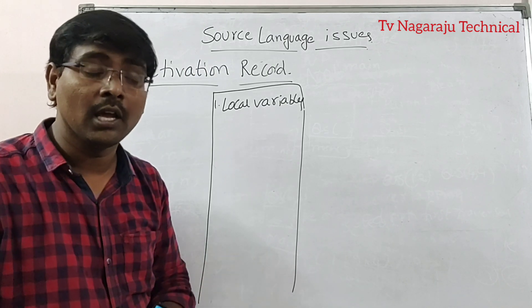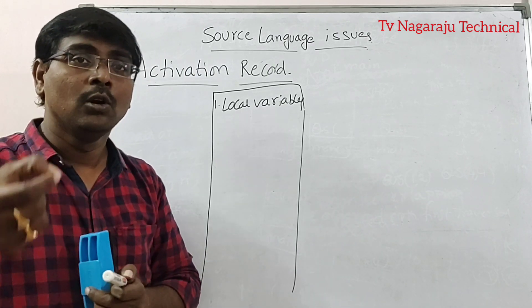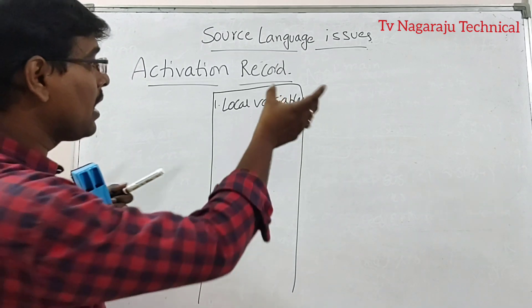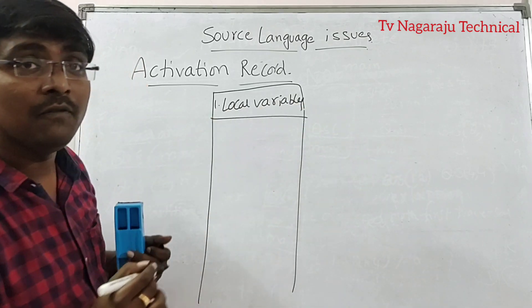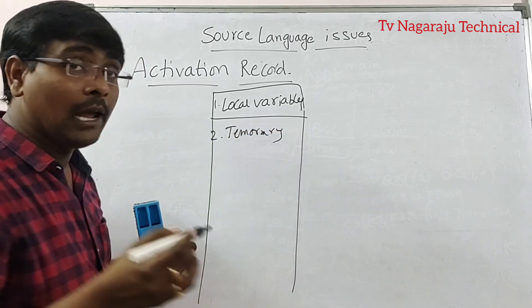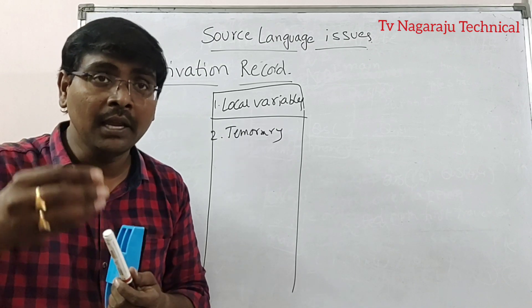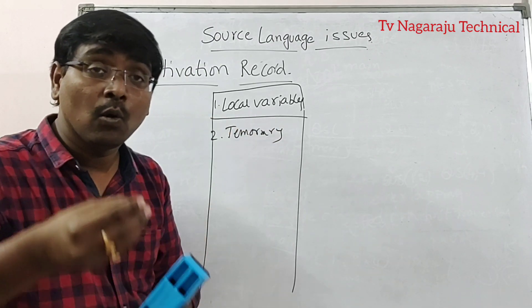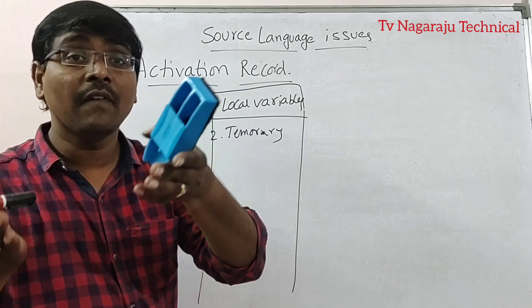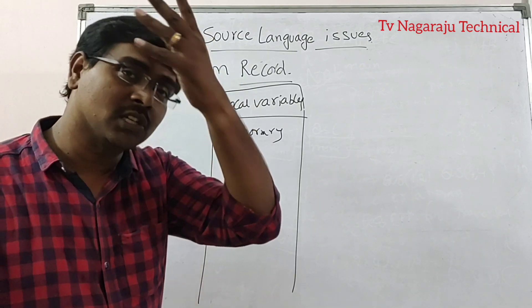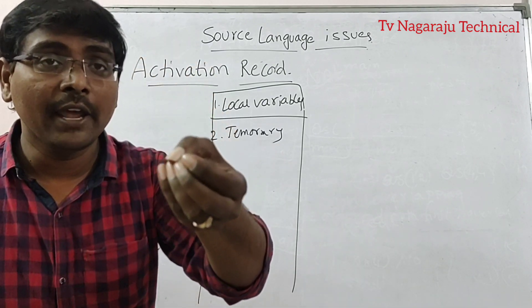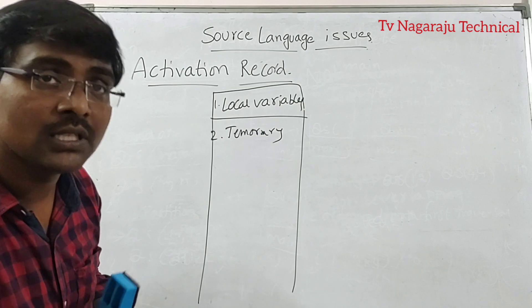During the procedure execution, to hold the local data — that is, the data that belongs to the procedure — it is stored under local variables. Next, temporary variables: these hold the temporary data that arises during evaluation of an expression. During evaluation of an expression, if you need any variables, then the temporary variables are created.